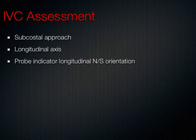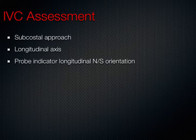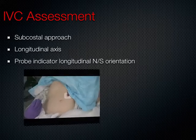From the subcostal approach, we can turn the probe 90 degrees to obtain a view of the inferior vena cava in its longitudinal axis. In this view, the probe orientation indicator is oriented north-south. Depending on whether you're trained by a cardiologist or an emergency physician, it's either north or south — it doesn't particularly matter since this is a tubular structure and either way you're just trying to get a long axis through the inferior vena cava.